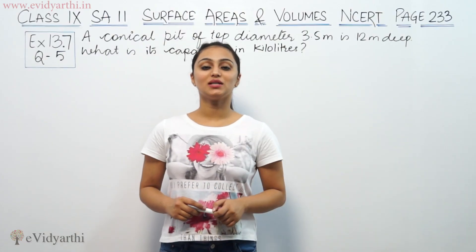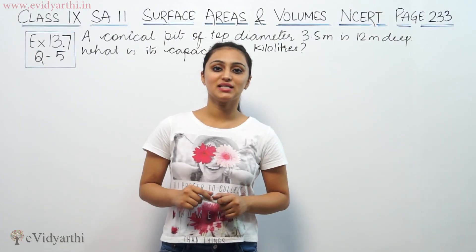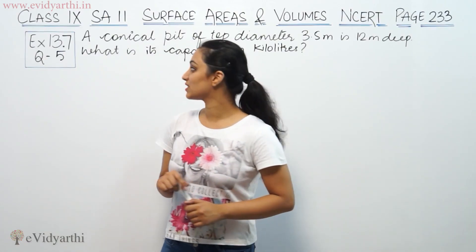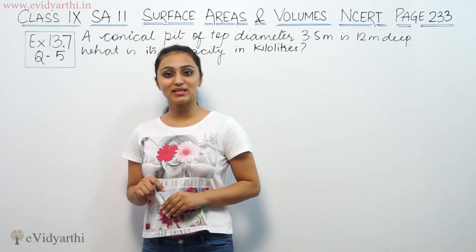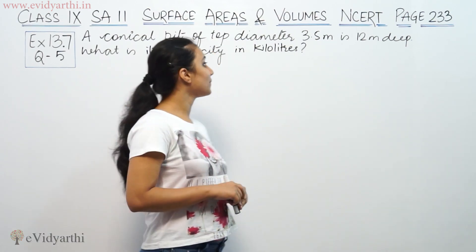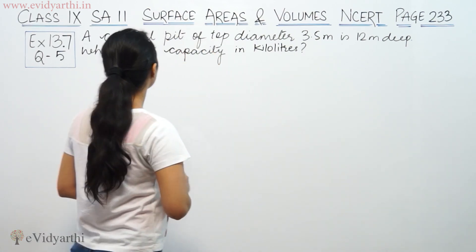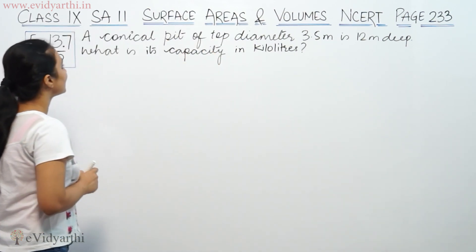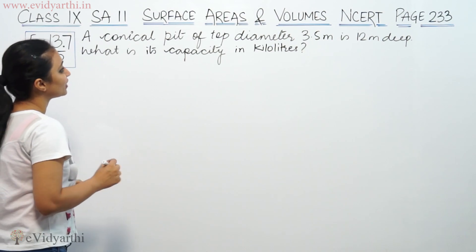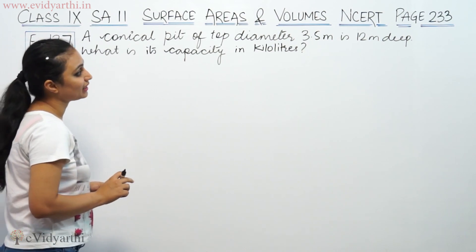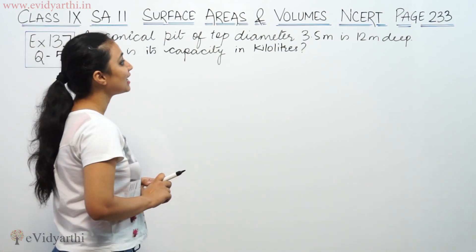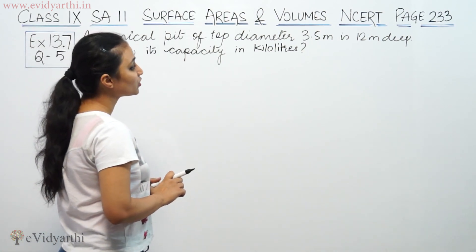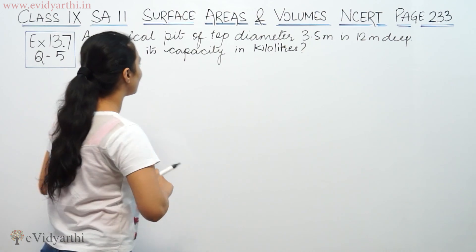Hi, this is Khushku with another question of surface areas and volumes. This is question from exercise 13.7, page 233 from NCERT, which says: the conical pit of top diameter 3.5 meters is 12 meters deep.